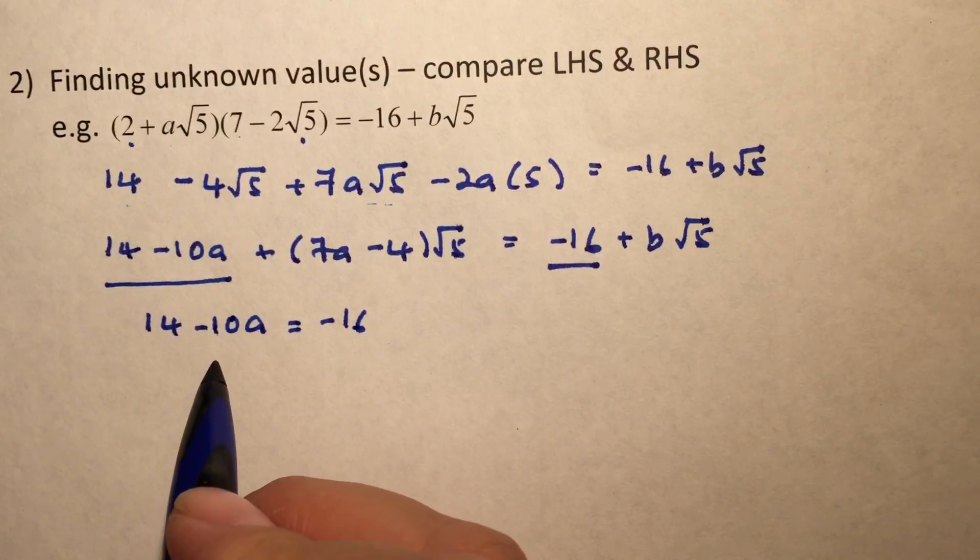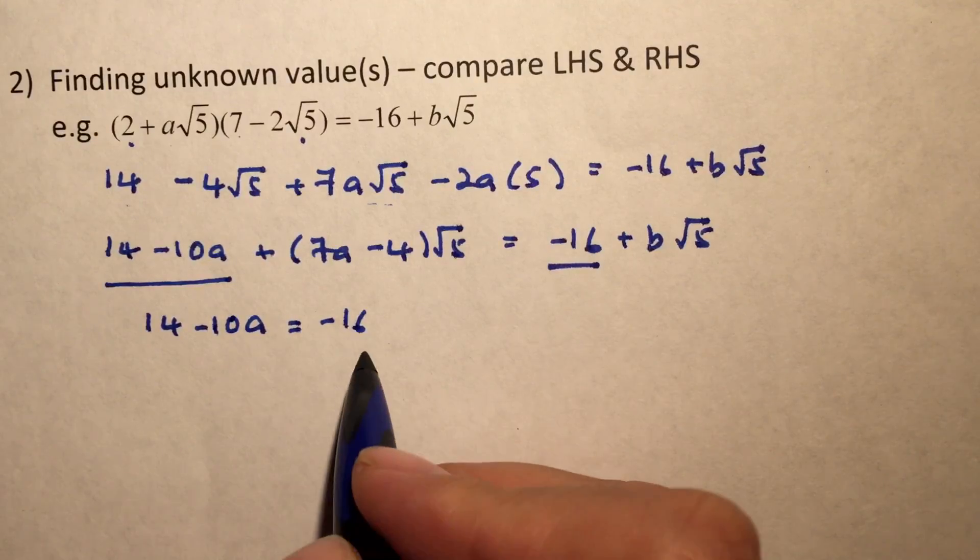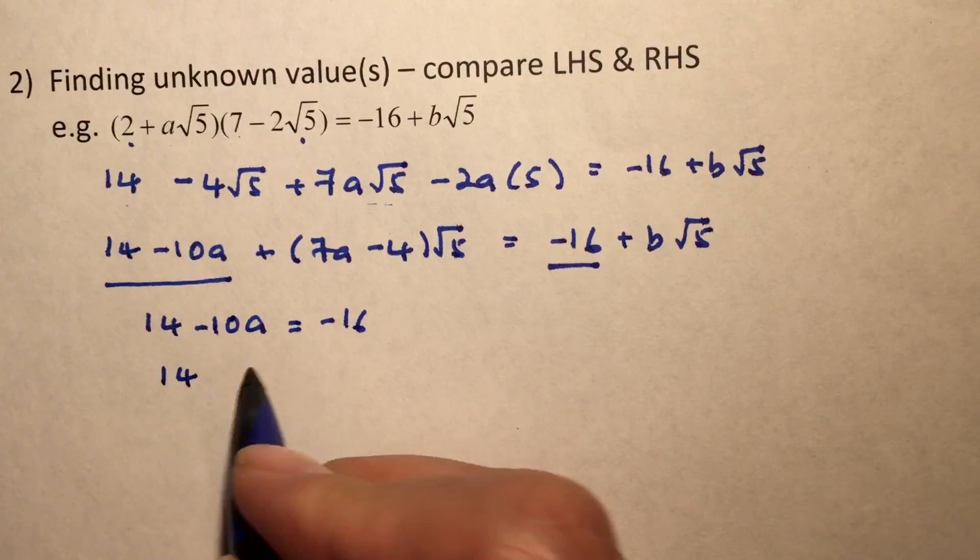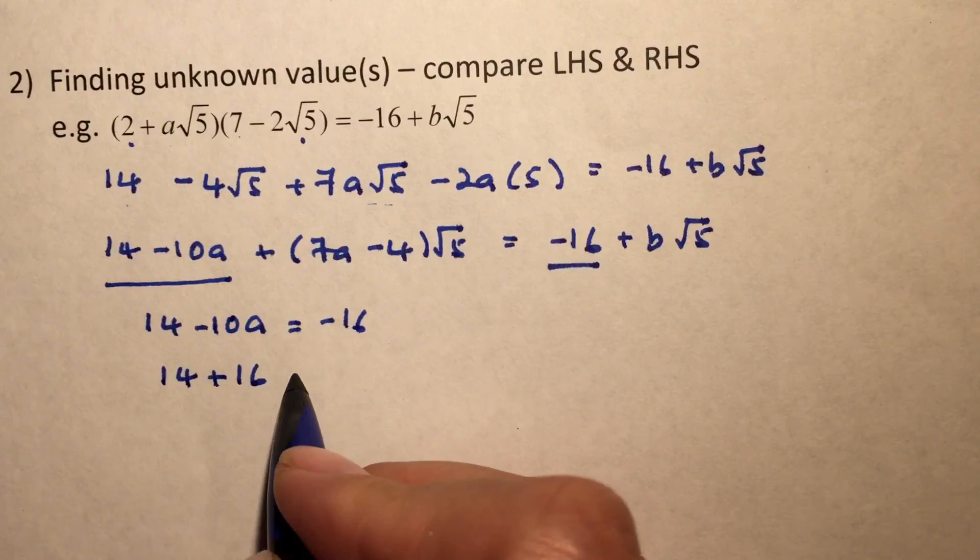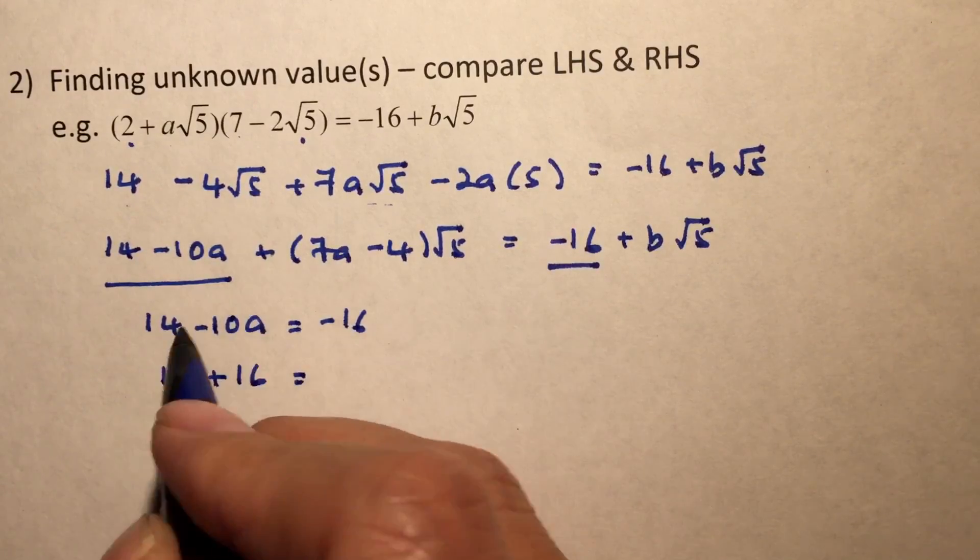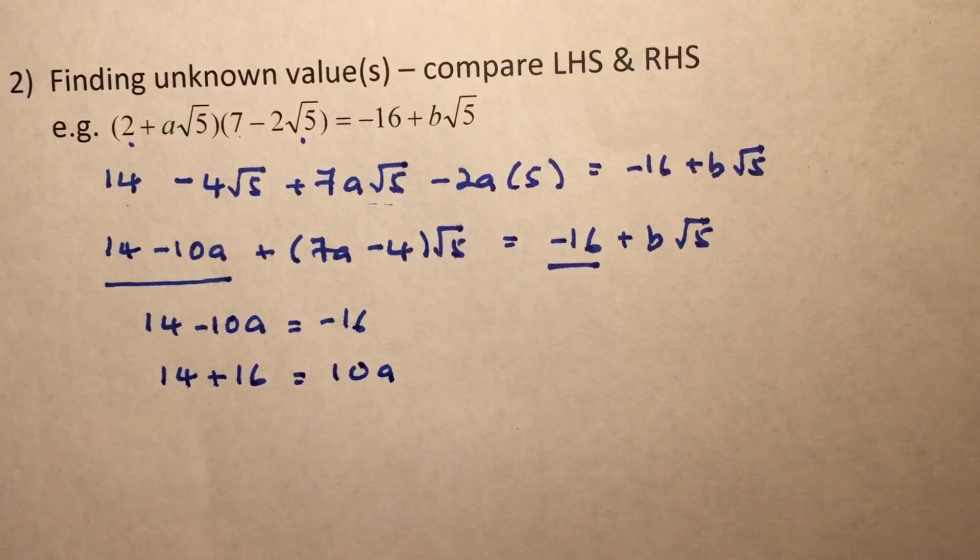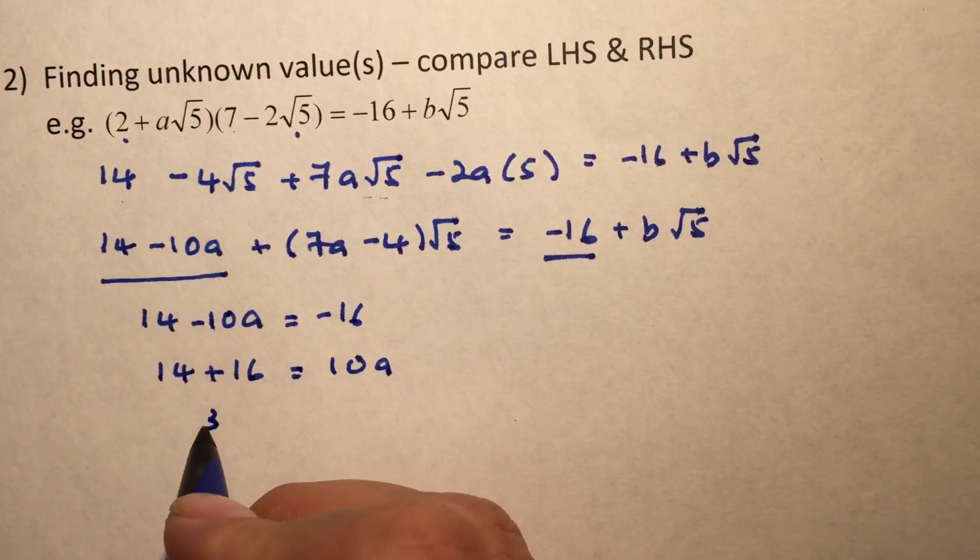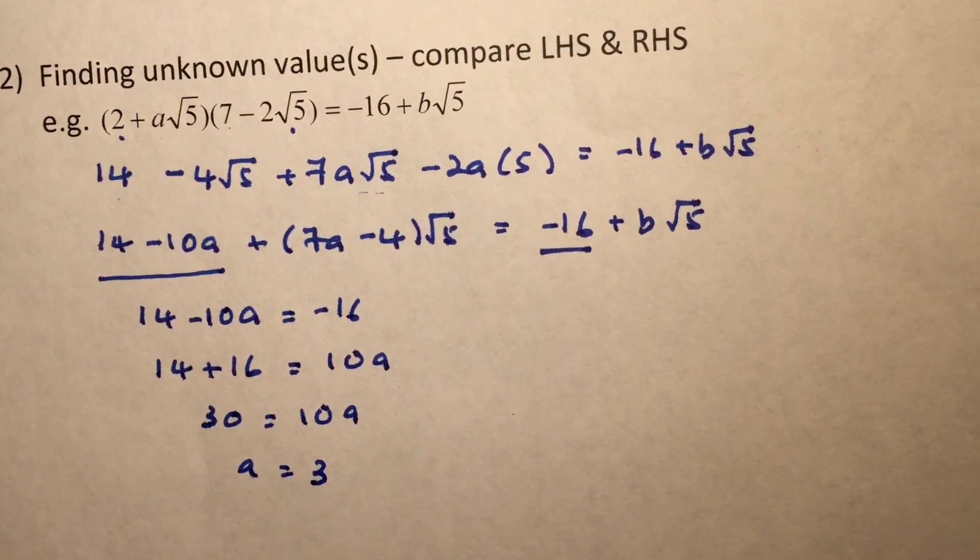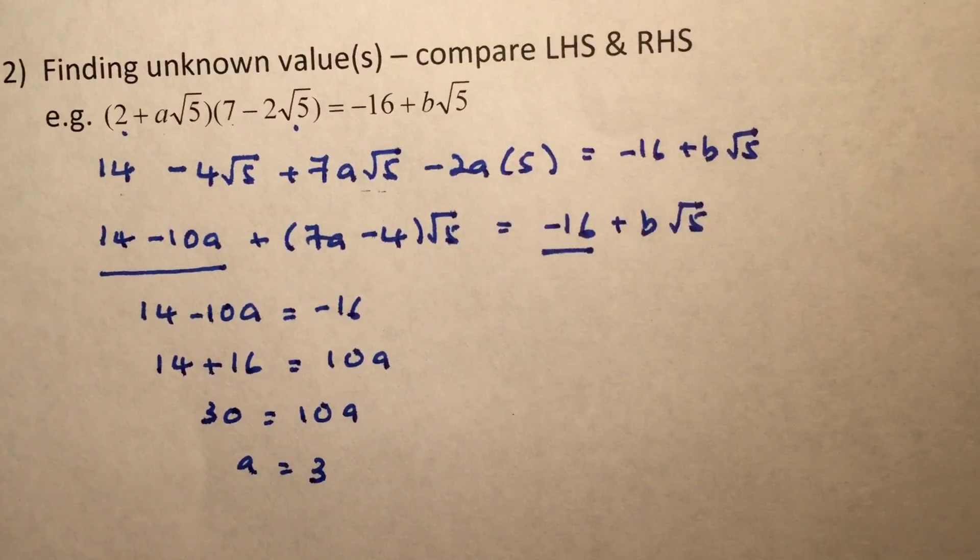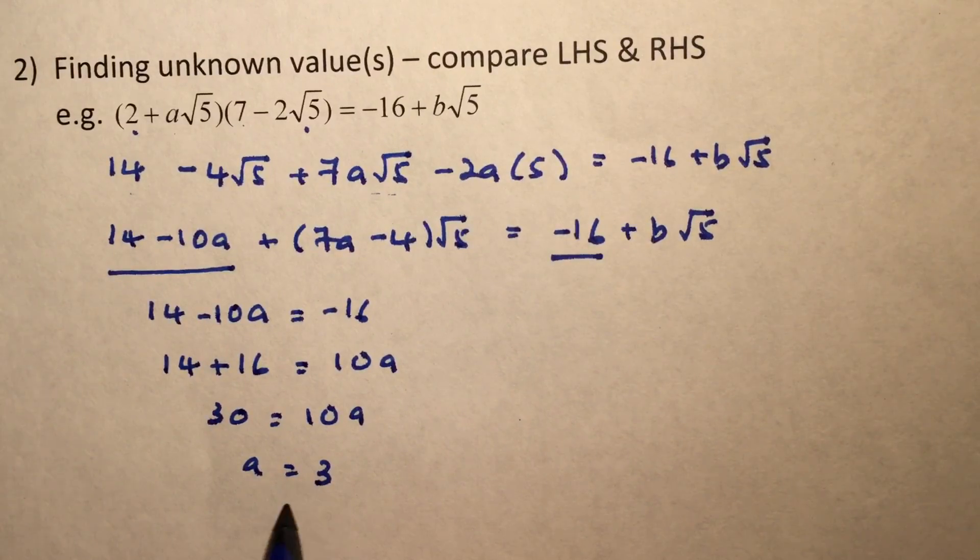And we can see that we can actually solve for A here. So we will get rid of the 16 over here. So we have it as 14 plus 16, and we will have the negative 10A when we bring it over to the other side. 14 plus 16 will give me 30, and my A will be 3. There you have it. That's the first unknown that we were supposed to look for. So we have A as 3.